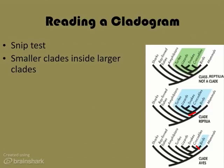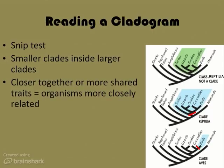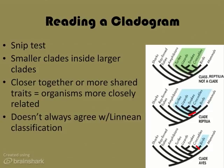As we saw, smaller clades can exist within larger clades. The clade aves exists within the clade reptilia, which exists within the clade chordata. The closer two organisms are on a clade, or the more shared traits they have, the more closely related those two organisms are. Cladistic analysis does not always agree with traditional Linnaean classification, but the most important thing to consider when looking at a cladogram is the links between the groups and how they're related to each other. Linnaeus never even thought of that question because Darwin hadn't done his work at that time — so Linnaeus did the best he could, which really was pretty good.